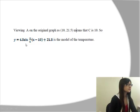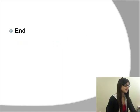Where 6.5 is the amplitude, π/6 is the period, 10 means going 10 units to the right side, and 21.5 means 25.5 units up.